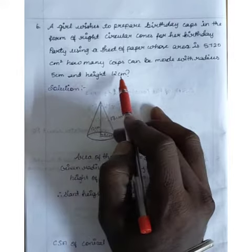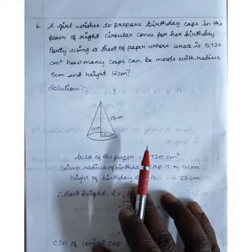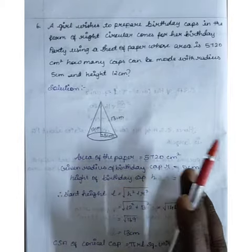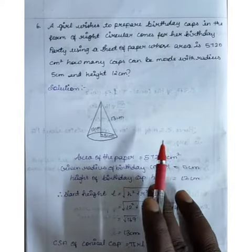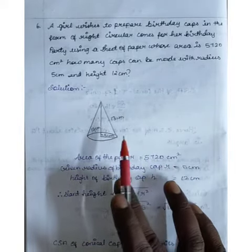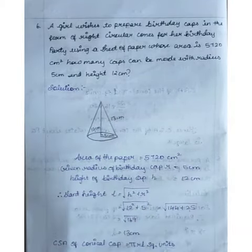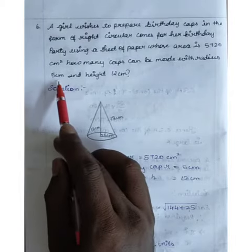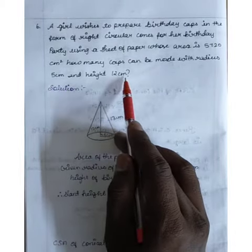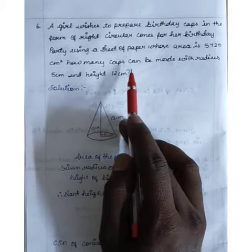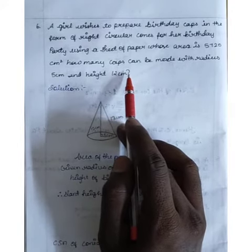So the question is, we have a paper with area 5720 cm². We need to find how many caps can be prepared with radius 5 cm and height 12 cm.